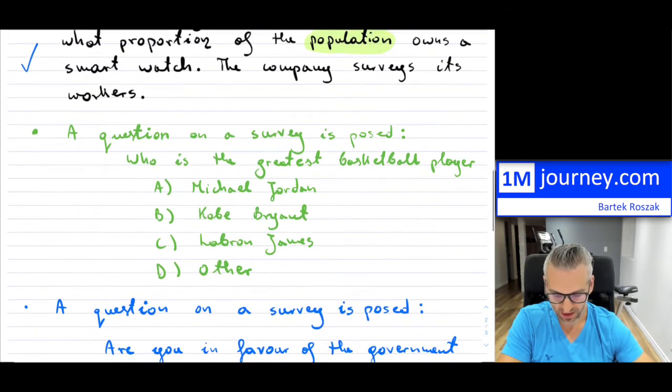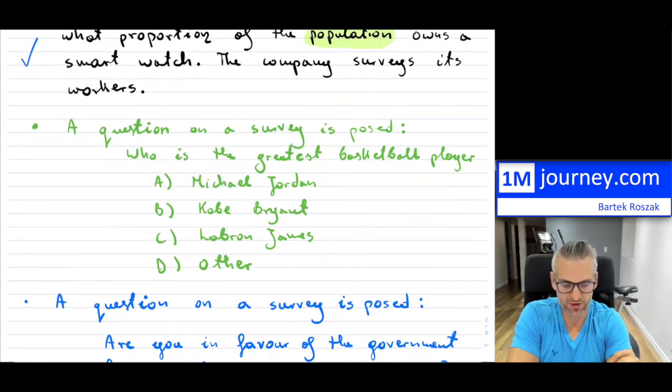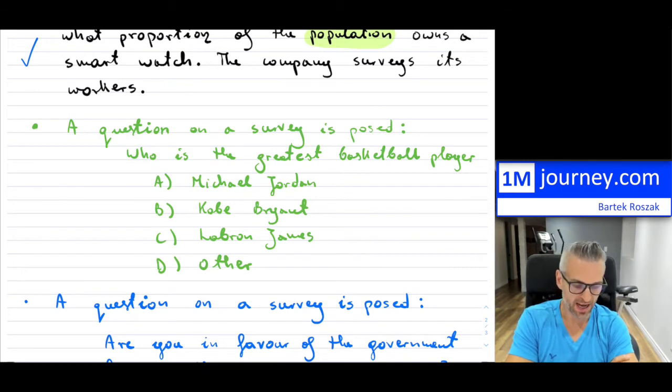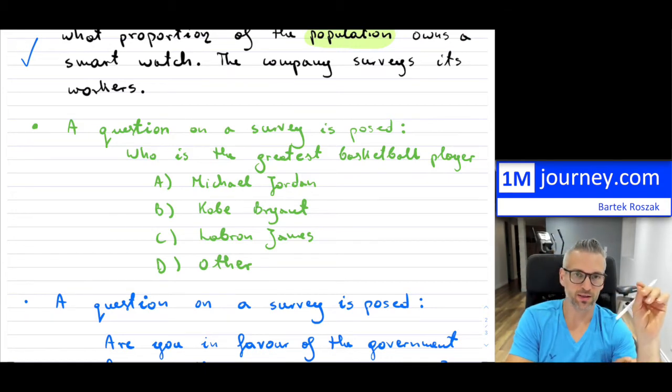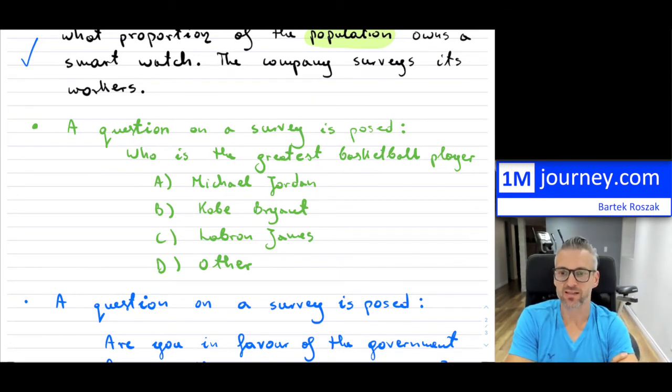The second question says a question on a survey is posed, and it says who is the greatest basketball player? Now, I wrote this, so this is actually my own personal bias. But if this was asked on a website or maybe a sports magazine or something like that, and it says A, Michael Jordan, B, Kobe Bryant, C, LeBron James, D, other. Now, many people might agree that Michael Jordan was maybe the greatest player of all time, or LeBron James and so on. But there is a bias here.